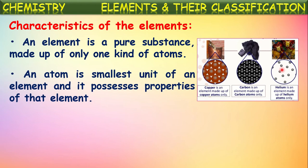An atom is the smallest unit of an element and it possesses the properties of that element. So the single atom of copper possesses the same properties as the copper material. It is the smallest part of an element which can exhibit the properties of that element.